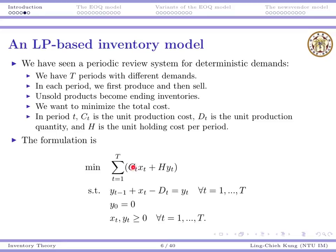You have X_t and Y_t as your decision variables for production and inventory quantity. Then you minimize the total inventory and production cost. You have the inventory balancing constraint in each period: beginning inventory plus the amount you produce minus the amount you sell equals your ending inventory.